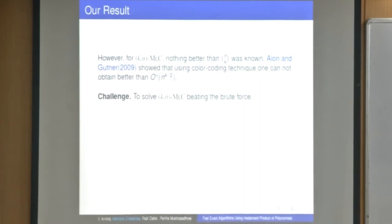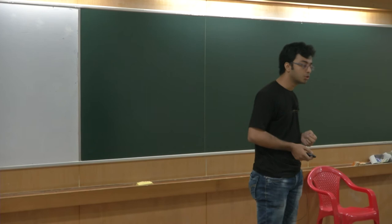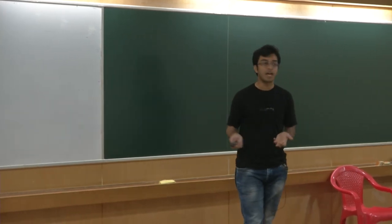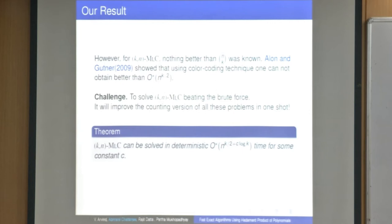The challenge was to come up with something for KNMLC beating the brute force — to improve the factor dependence on k in the exponent, which would improve all counting versions of those problems in one shot. Cootes and Williams posed this as an open problem. The main result I am going to present: for the KNMLC problem we can get a deterministic O*(n^(k/2 + c·log k)) time algorithm.